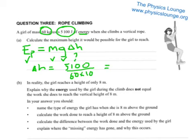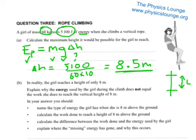5100 divided by 600 gives you 8.5 metres. Just going back, we've calculated the height up the rope that she would move, based on the gravitational potential energy gained.